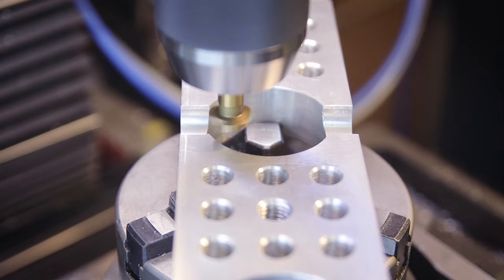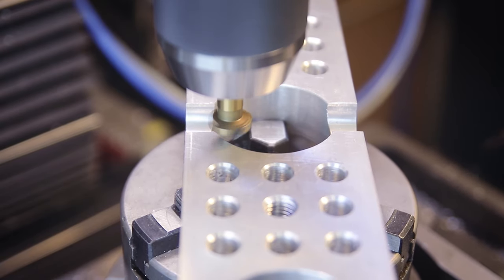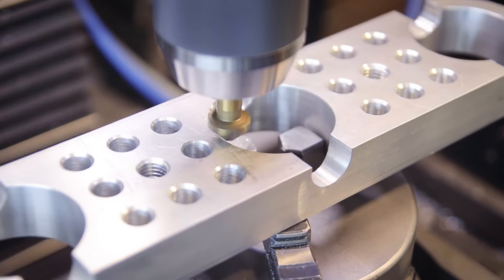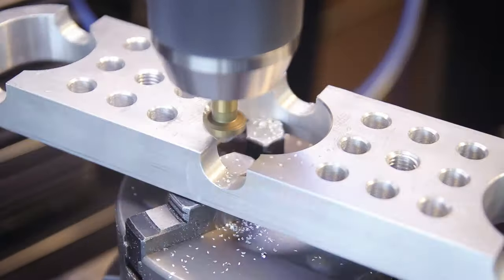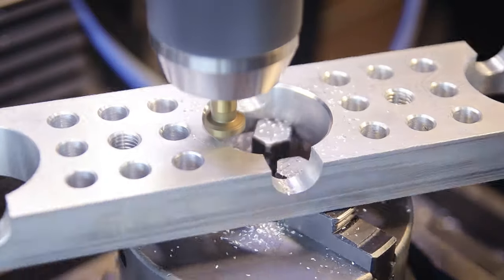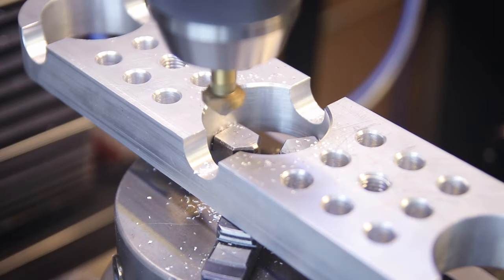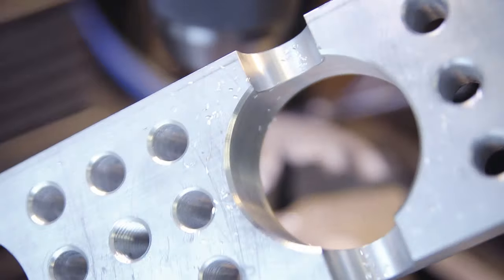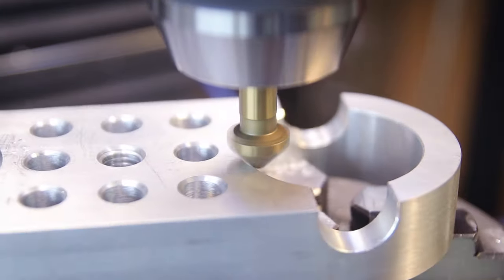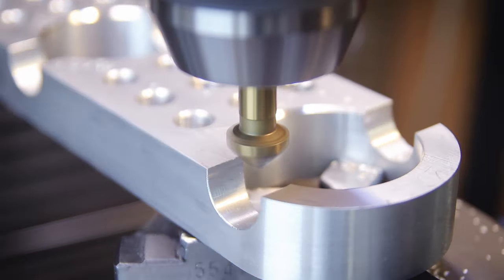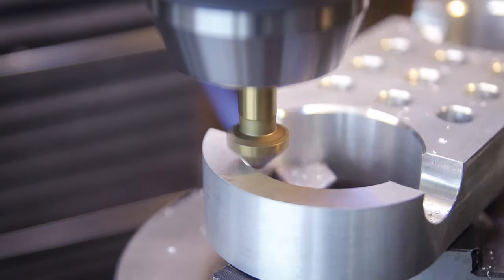Since I still had the rotary table set up it was then very easy to put some nice clean chamfers on the bigger holes. And I'm just using a 3 flute countersink bit for this. It might look weird since usually you only see these being used to chamfer round holes but they actually work quite well for chamfering all kinds of edges.